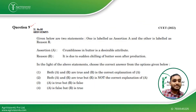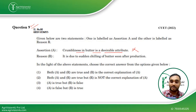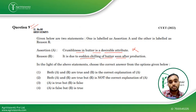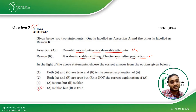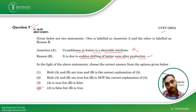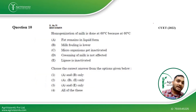Coming to Question 9, we have an assertion and reason based question. The assertion states that crumbliness in butter is a desirable attribute — this is not at all a desirable attribute, as we discussed in the dairy technology class. The reason states it is due to sudden chilling of butter too soon after production — this is correct. So the assertion is wrong but the reason is correct, making the fourth option the right answer. This question was asked in CUET 2022.